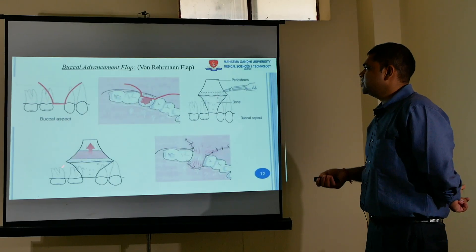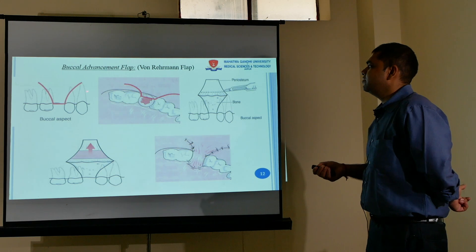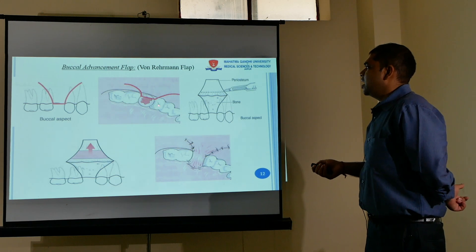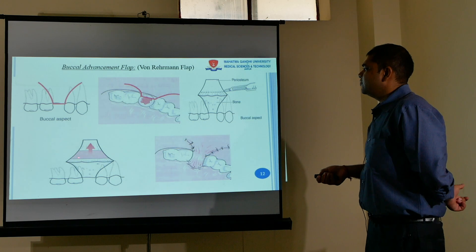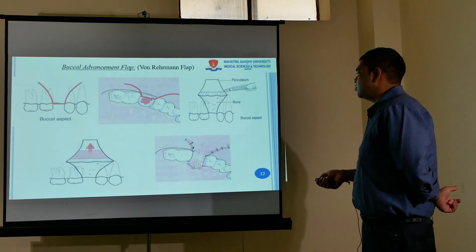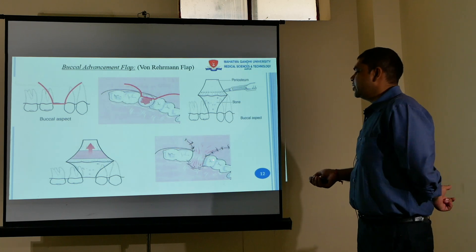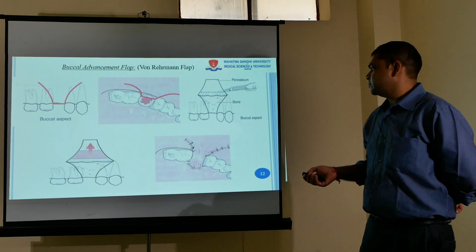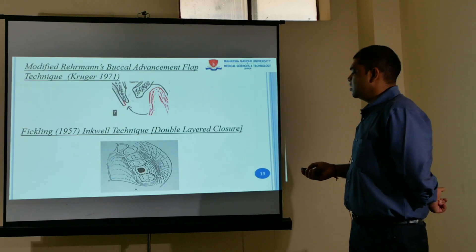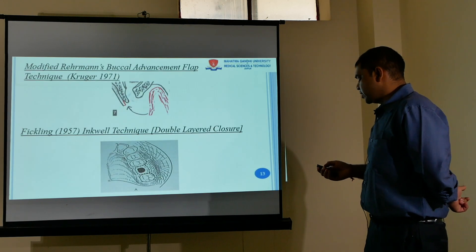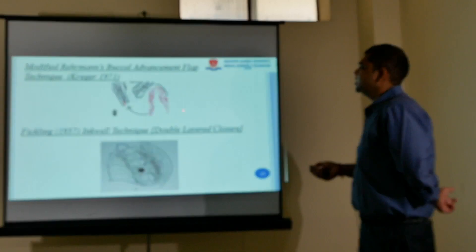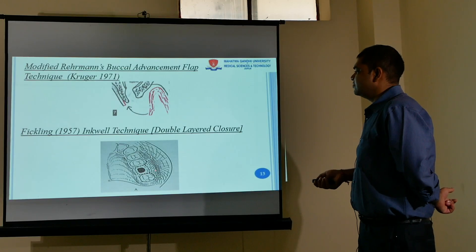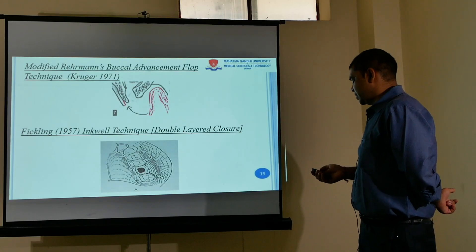For the buccal flap: an incision is placed, the flap is elevated with complete periosteum detachment, the flap is elevated, and tight closure is achieved with vertical mattress sutures. A modification of this technique can also be seen, along with the associated wound closure.